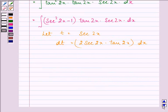So here tan 2x and secant 2x into dx can be written as we need to take secant 2x minus 1.